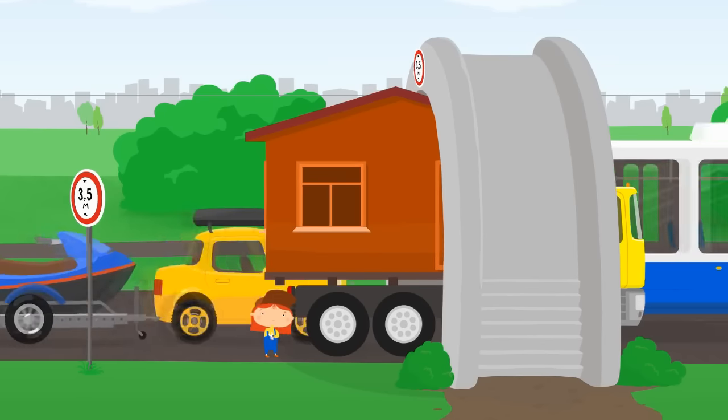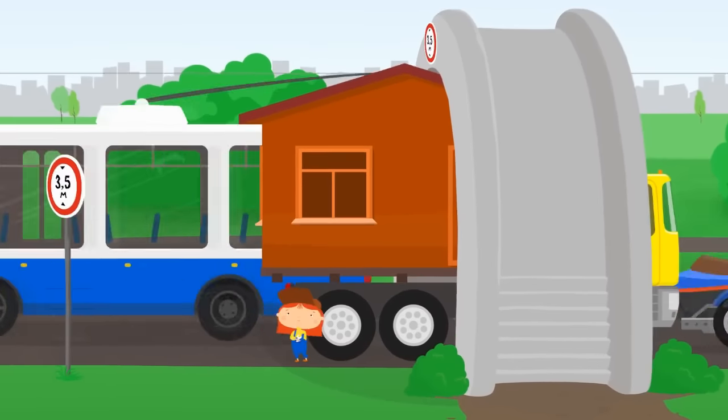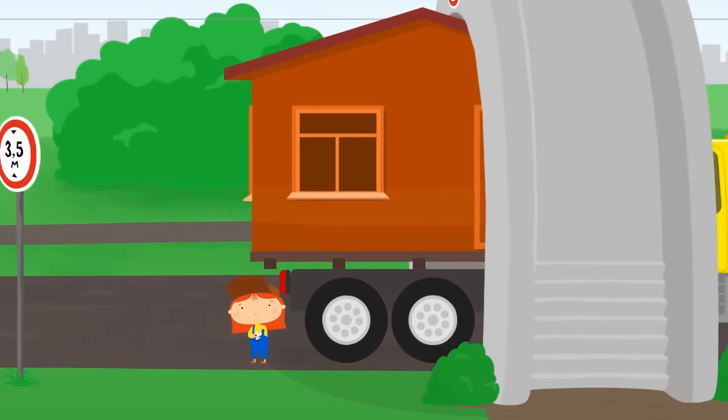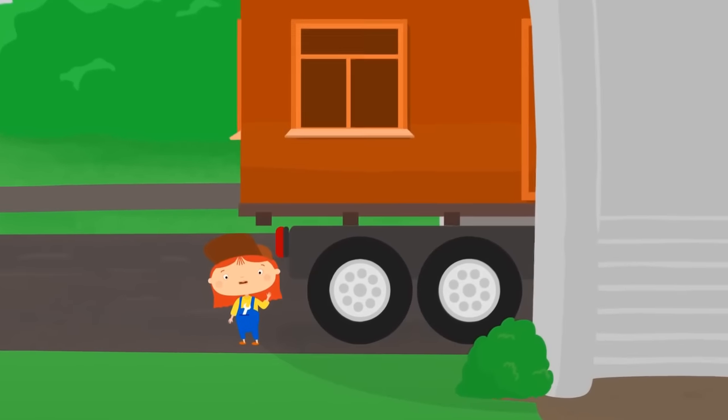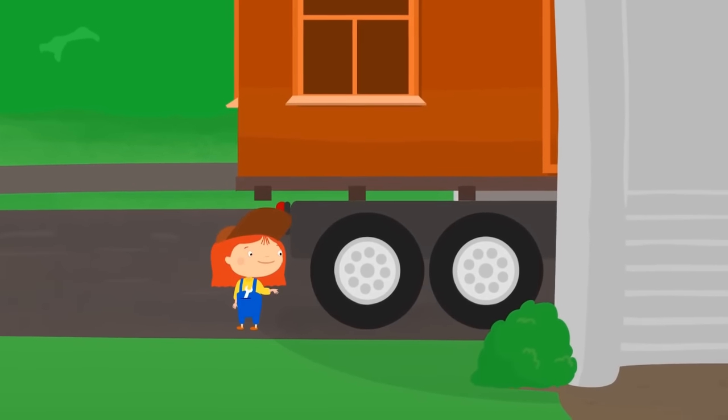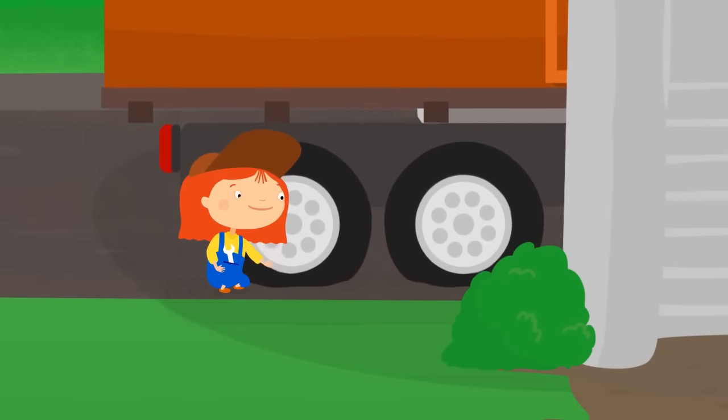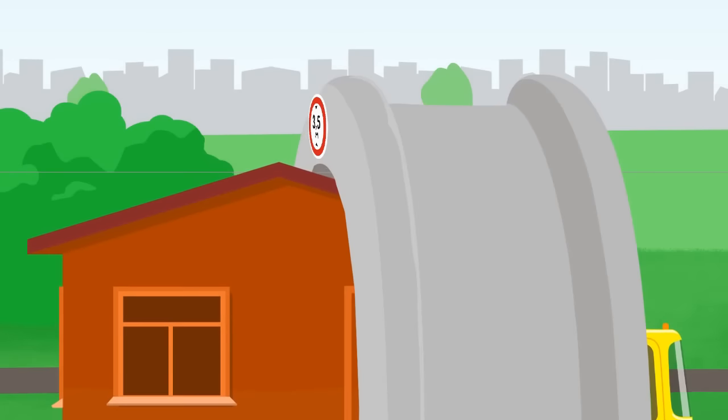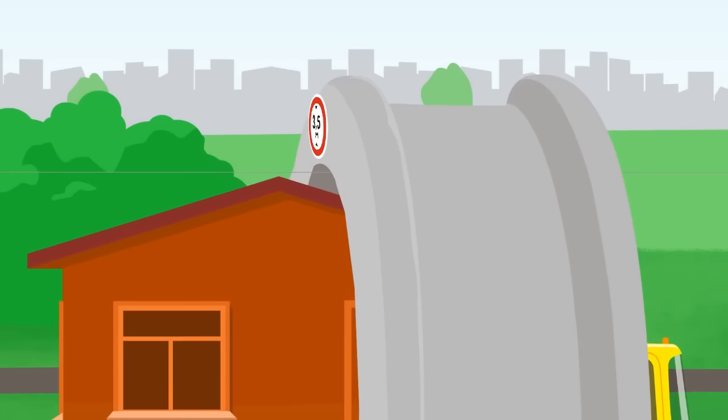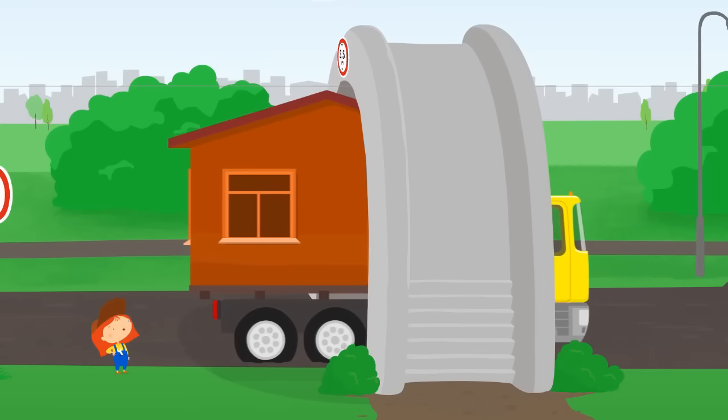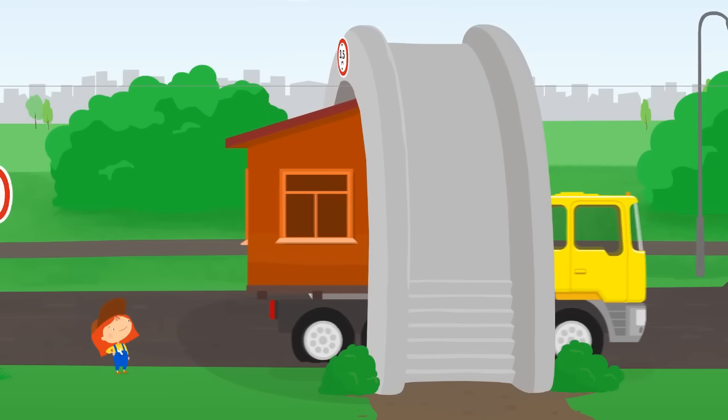What can I do? How can I fix the difference? I have an idea. If I deflate the tires a bit, it worked. The truck is lower now, and it passed under the bridge.